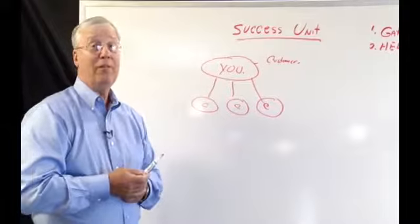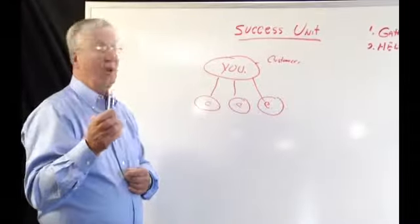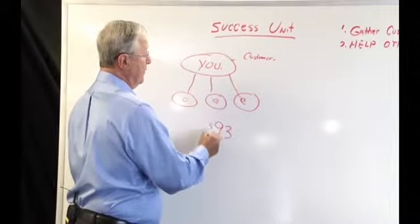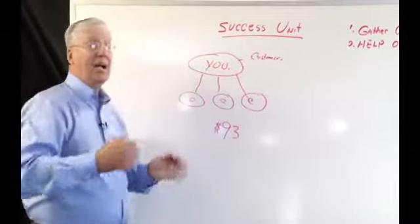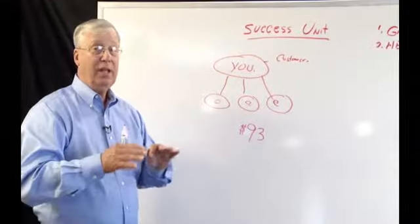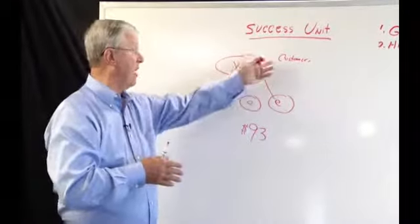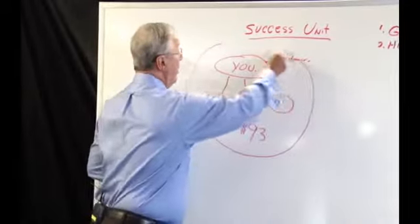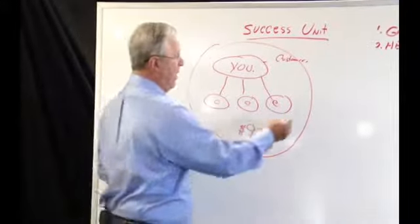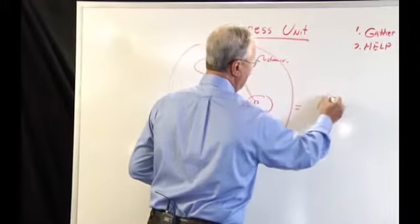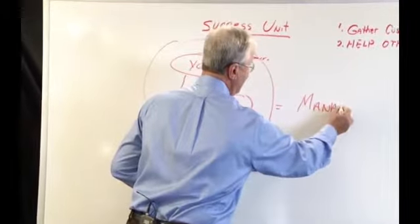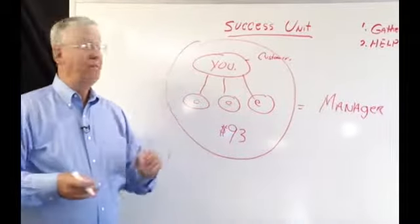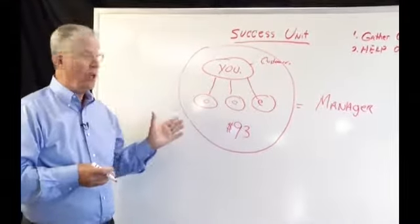Now, there's one other thing that you have to do to complete the success unit, and that's have $93 in personal and customer subscription volume. $93 in your personal customers, this volume, and your personal usage. And this is a completed success unit. We have another name for this success unit, and it's called Manager. That's right, that is our first bonus position that pays out the full bonus, Manager. So a success unit is a Manager.